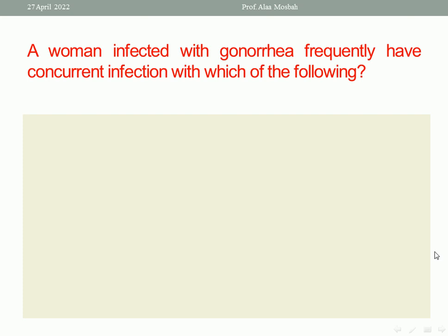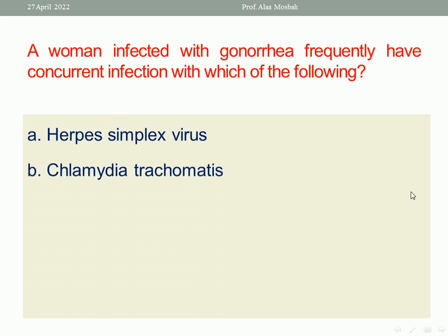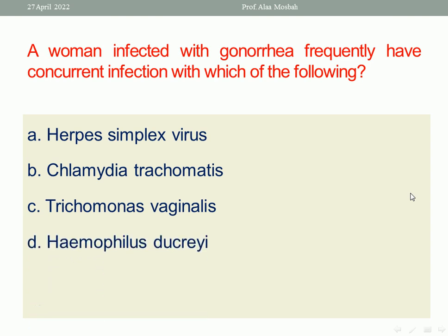Women infected with gonorrhea frequently have concurrent infection with which of the following? Herpes simplex virus, Chlamydia trachomatis, Trichomonas vaginalis, or Haemophilus ducreyi. There is an association between gonorrhea and Chlamydia trachomatis. So the best response here is chlamydia infection. That is why when we manage a patient with gonorrhea, we give her treatment for chlamydia because of the common association between both.